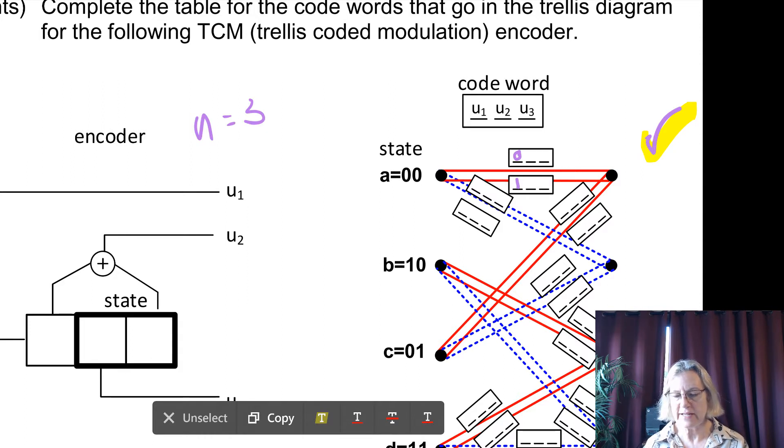And that's true for every transition from state A to B, B to C, etc. Every transition has two valid code words because one of the code words, one of the bits in the code word has no encoding.